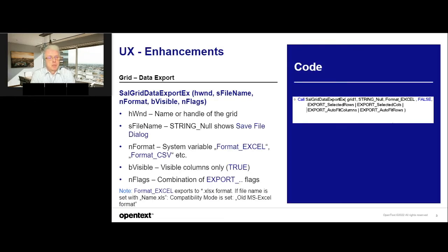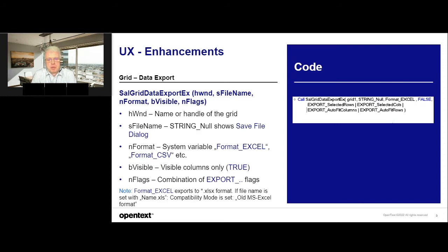Let's start with the grid. The grid has a new function for export: grid data export X. We have different flags. If you use the XLSX format for export or import, you can choose the XLSX format inside the data save format, and then it automatically uses the latest format. We have Excel format, CSV, and so on. There's a new flag 'visible columns only' — if set to true, you will only export the visible columns. We also have a combination of export flags: select rows, selected columns, auto-fit columns, and auto-fit rows, so the exported file looks exactly like it does inside the grid.